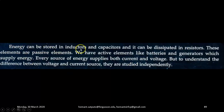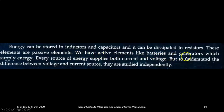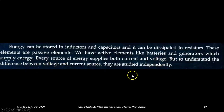Energy can be stored in inductors and capacitors, and it can be dissipated in resistors. These elements are passive elements. We have active elements like batteries and generators which supply energy. Every source of energy supplies both current and voltage, but to understand the difference between voltage and current source, they are studied independently.